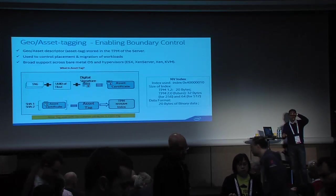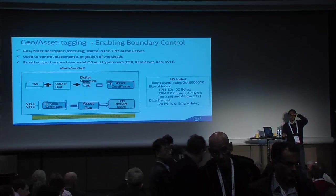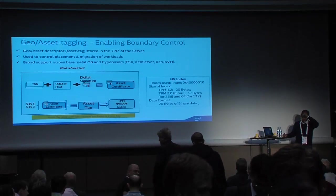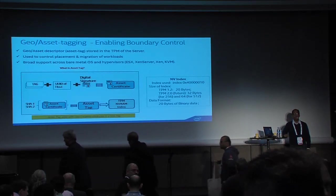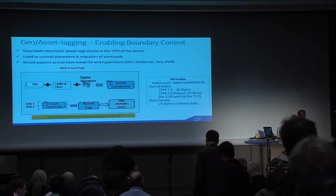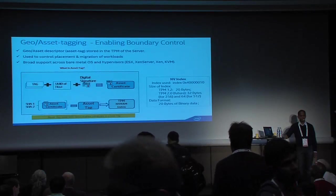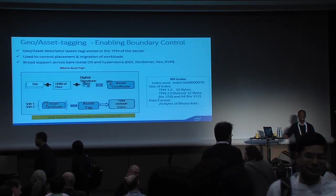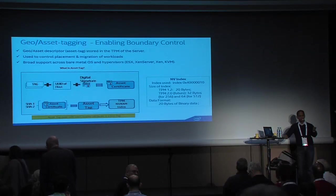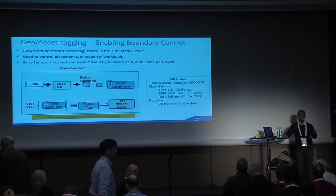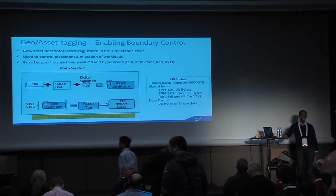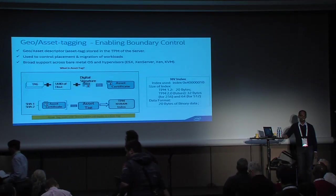Regarding whether a VM can obtain the asset tag from the host: yes, the VM can talk to an attestation system and get the attestation of the tag. The assertion also includes what tag the server presented. So conceptually, the VM can get the tag through that assertion.